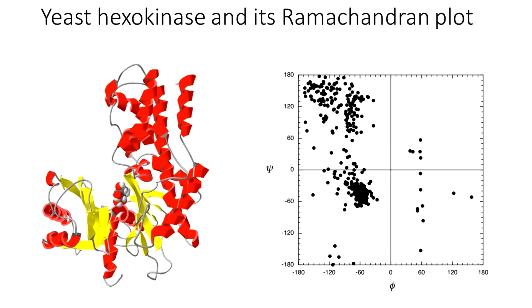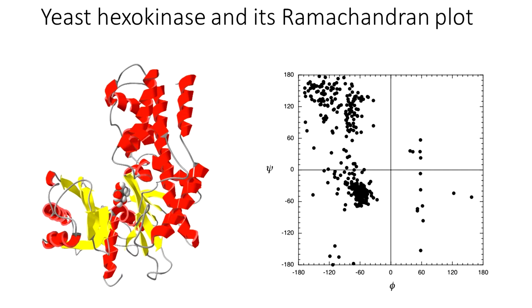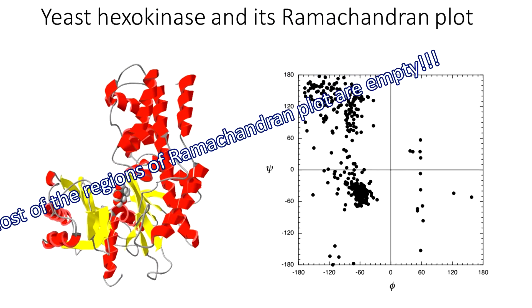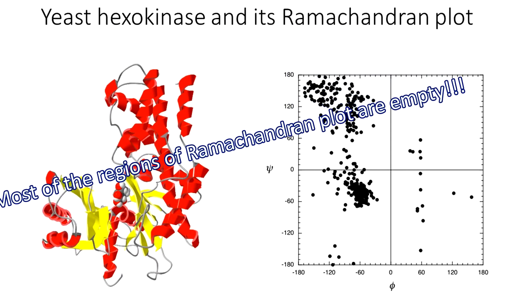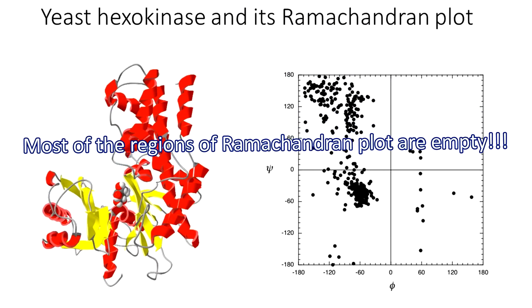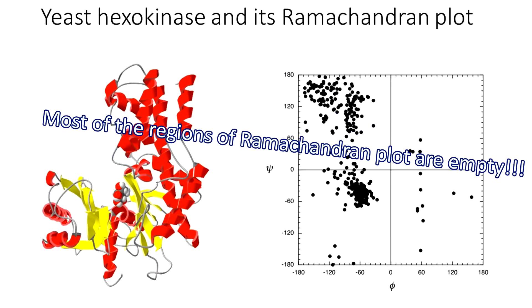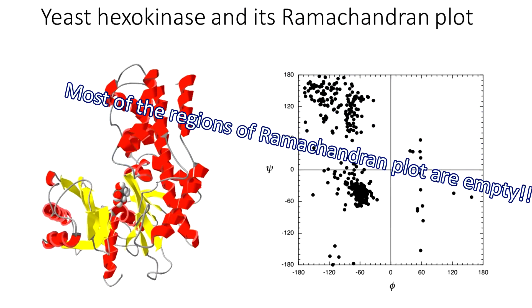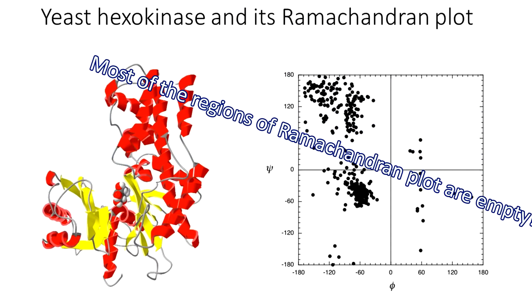Observe this Ramachandran Plot. What do you see? Exactly — there are large areas where there are no examples of certain combinations of phi and psi. There are no data points. Why is this so?